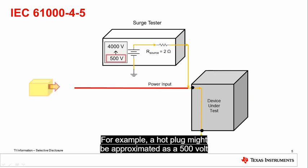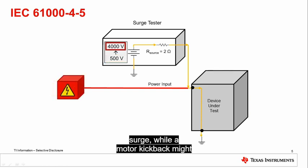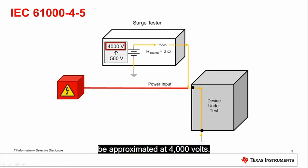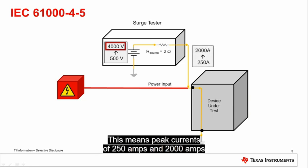For example, a hot plug might be approximated as a 500 volt surge, while a motor kickback might be approximated at 4000 volts. This means peak currents of 250 amps and 2000 amps respectively, based on the 2 ohm output impedance.